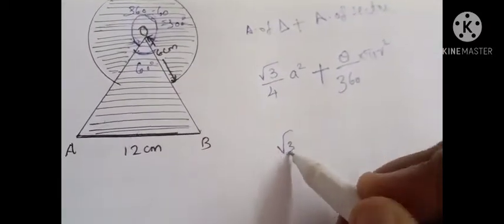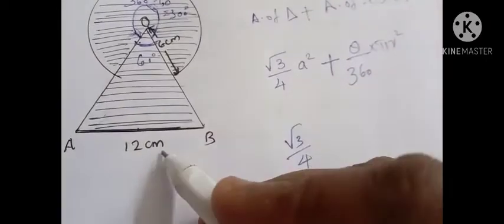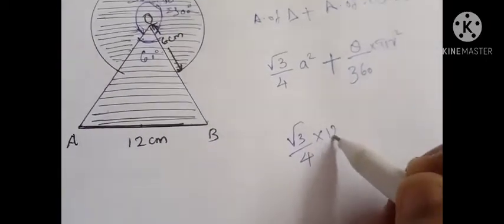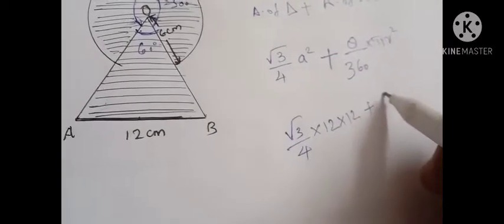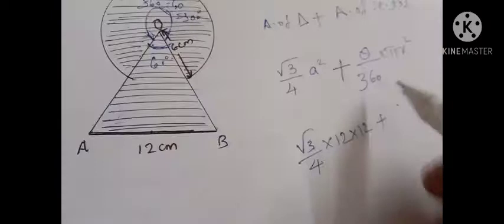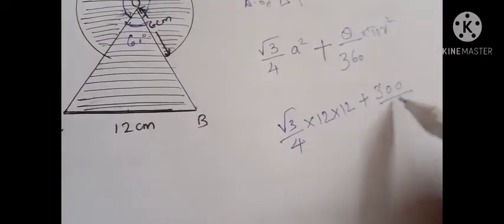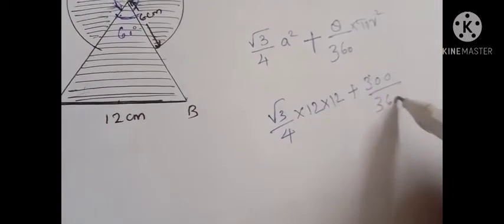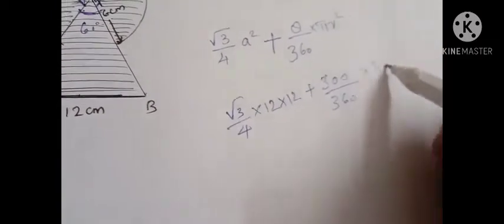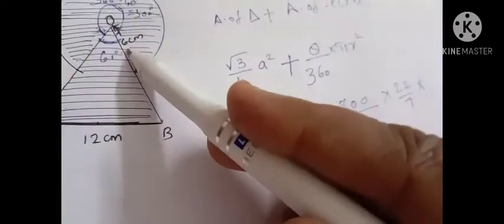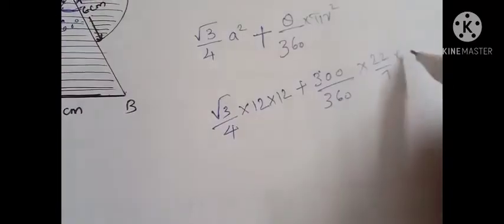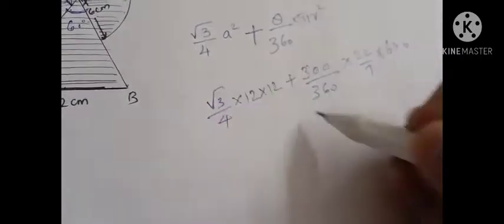Substituting values: (√3/4) × 12² plus (300/360) × π × 6². Here a = 12, so 12 squared is 12 × 12. For the major sector, θ = 300 degrees, π = 22/7, and radius = 6, so r squared is 6 × 6.